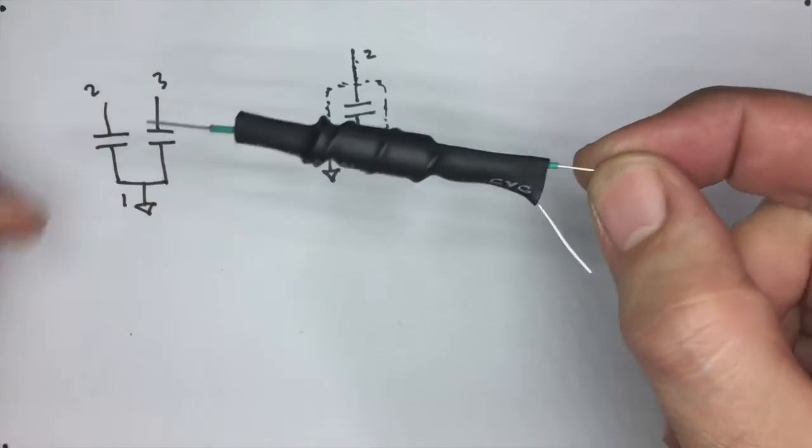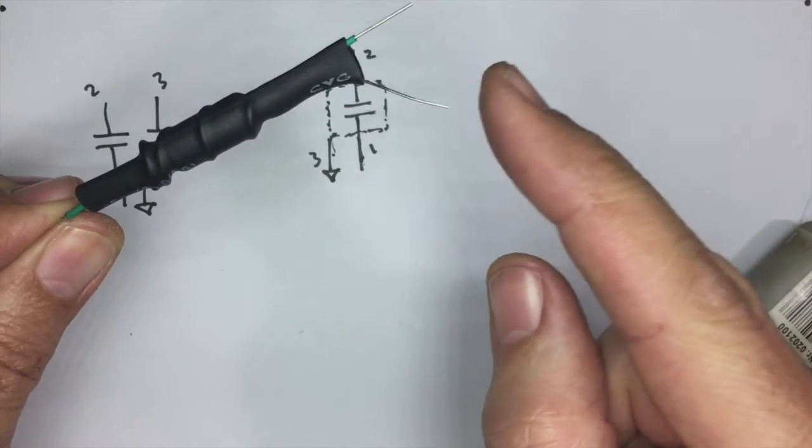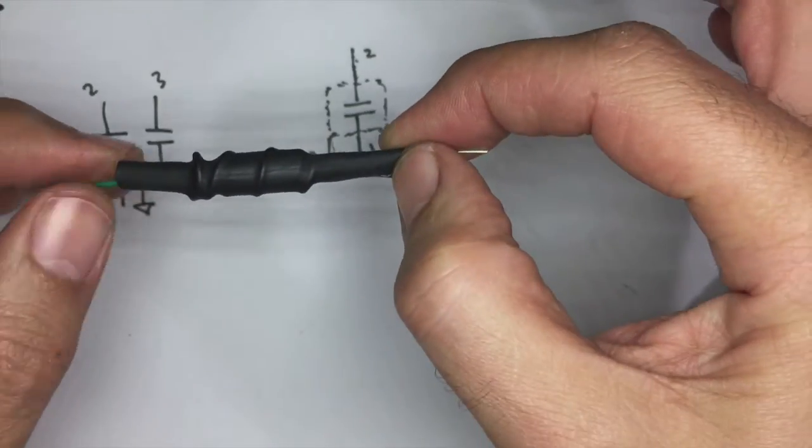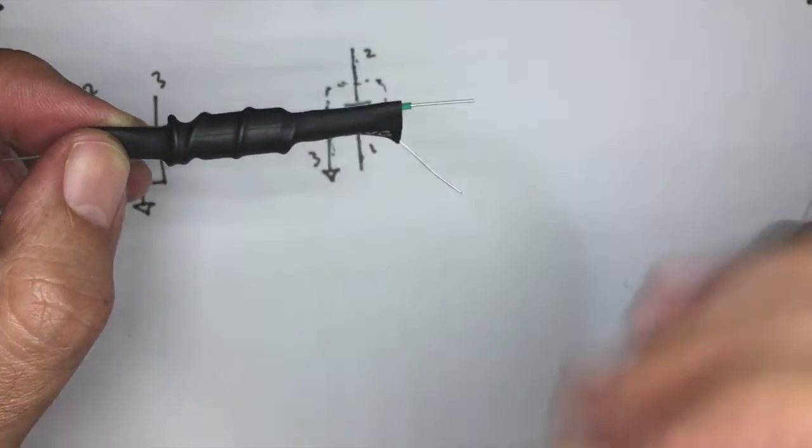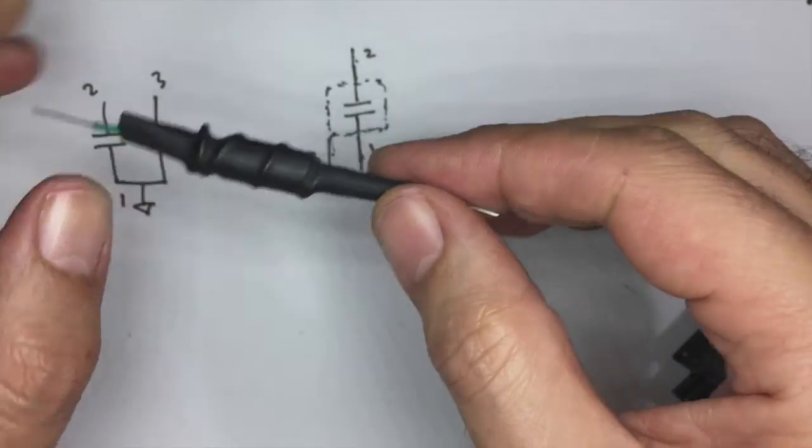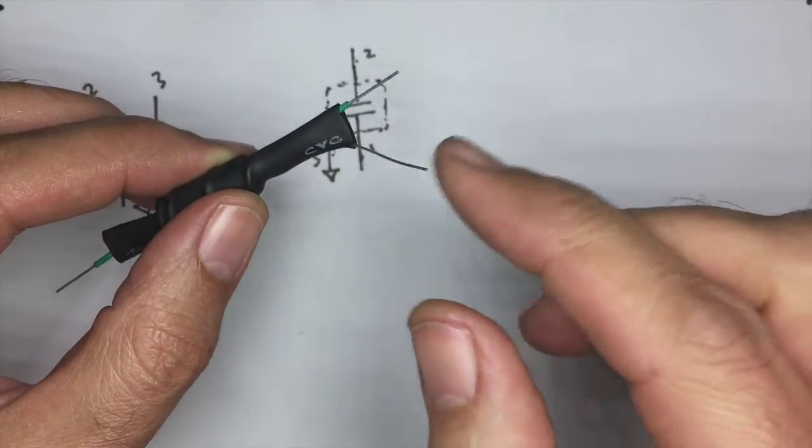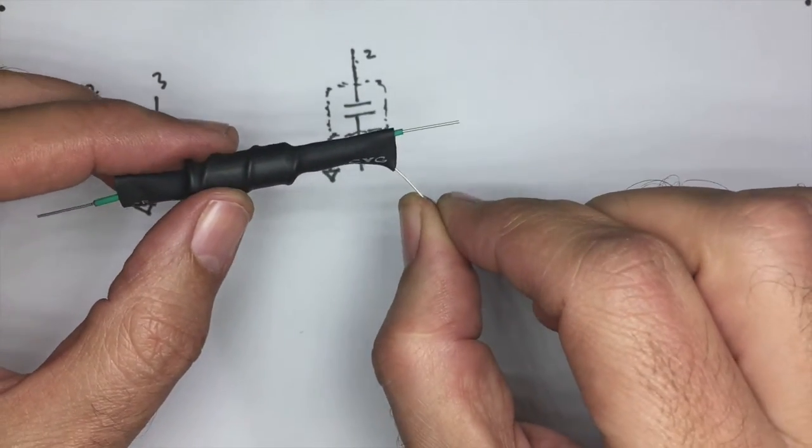One lead, one lead, ground lead. So what we have now is we have a capacitor that is shielded from approximately there to there. And that shield is connected to this point here, which we will then connect to ground.